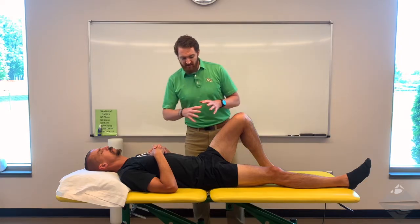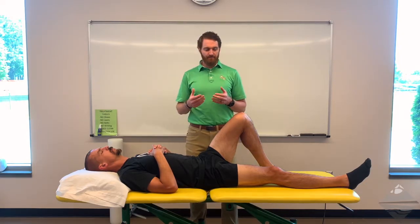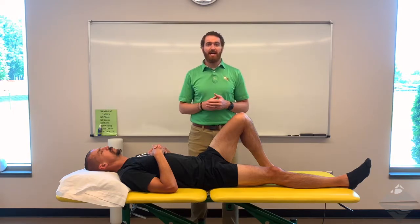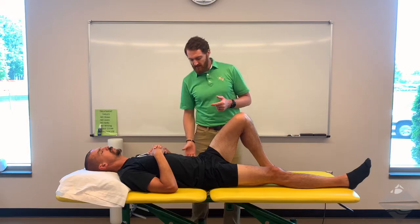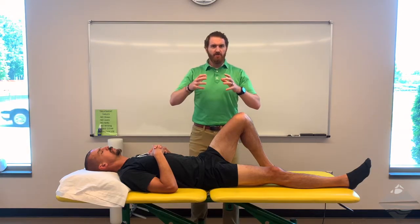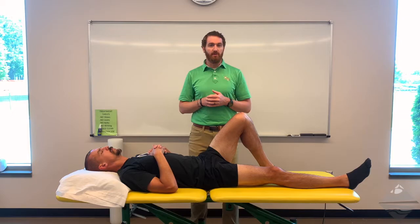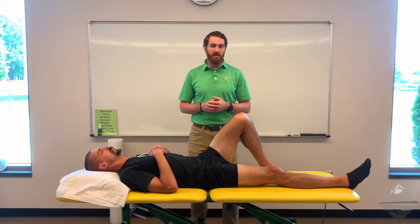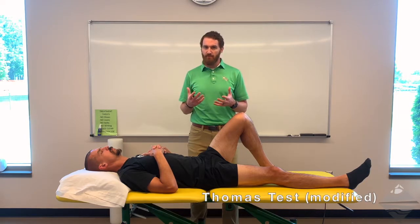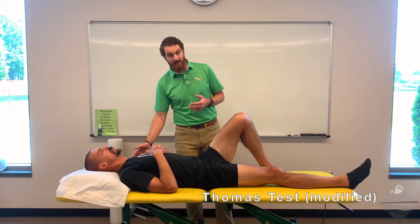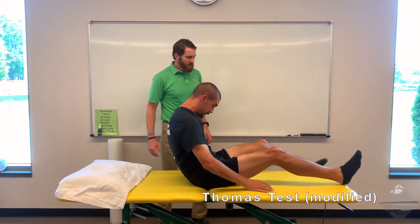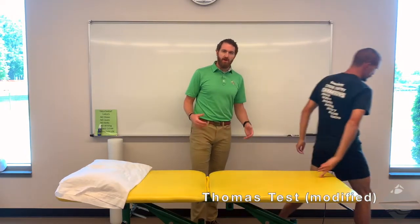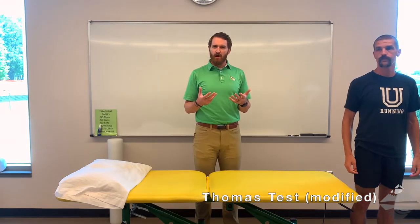There's one thing the original Thomas test doesn't account for — whether the individual can actually get beyond horizontal, or if they're leveraging the lumbosacral spine to compensate for range of motion loss through the soft tissue in the hip. A modified version has been proposed to address this. For this we need our patient to stand up and come to the end of the table. Because this is a moving test, I'll describe the steps to the patient first.